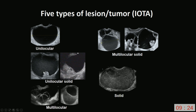Instead of saying 'a cyst with one cyst locule and a solid component,' we say 'unilocular solid cyst.' Instead of saying 'a cyst with both septa and solid components,' we say 'multilocular solid cyst.'